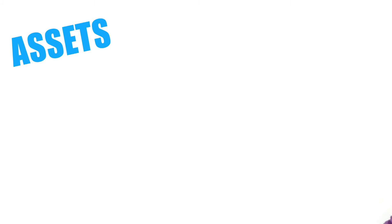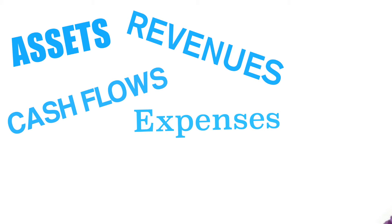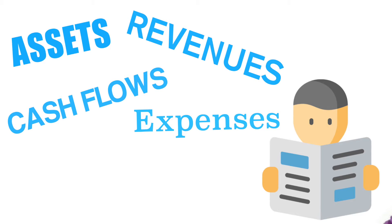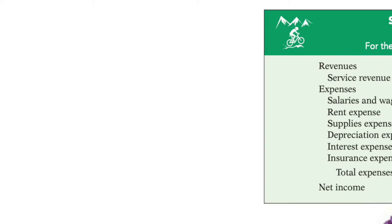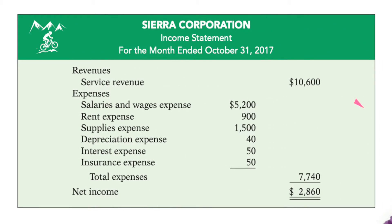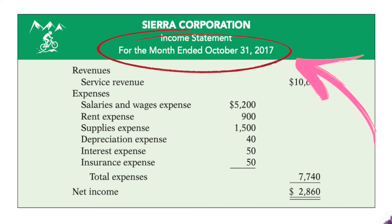Business information such as assets, revenues, cash flows, and expenses are all important to users of accounting information and are presented in the form of financial statements. There are four financial statements that accountants create, but in this video we're going to look at the income statement. The income statement is a financial reporting tool that presents information from a period of time.